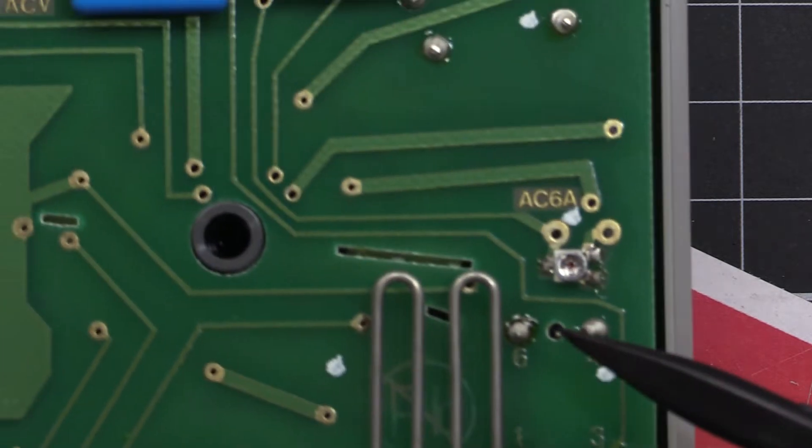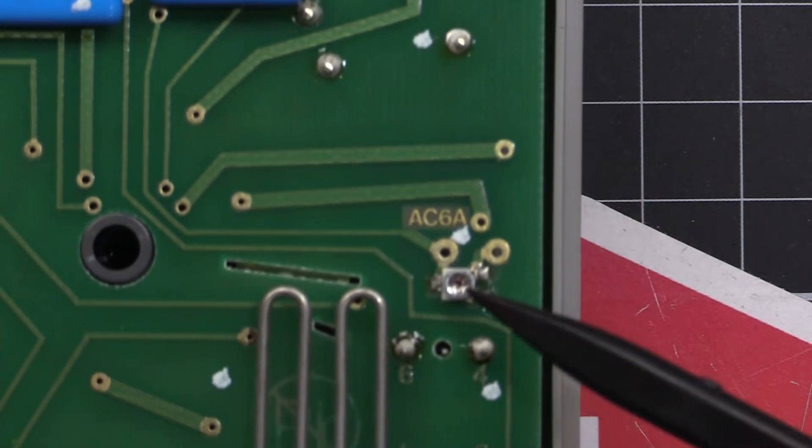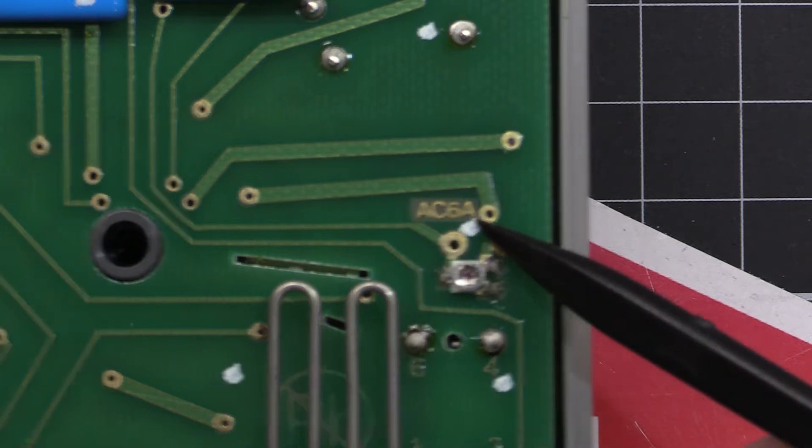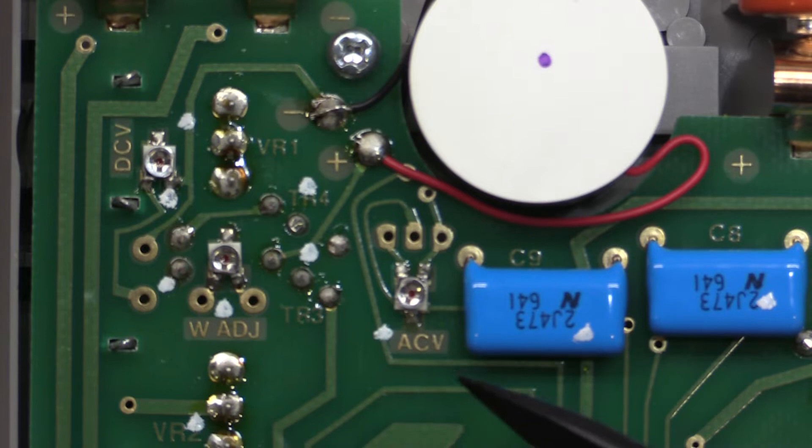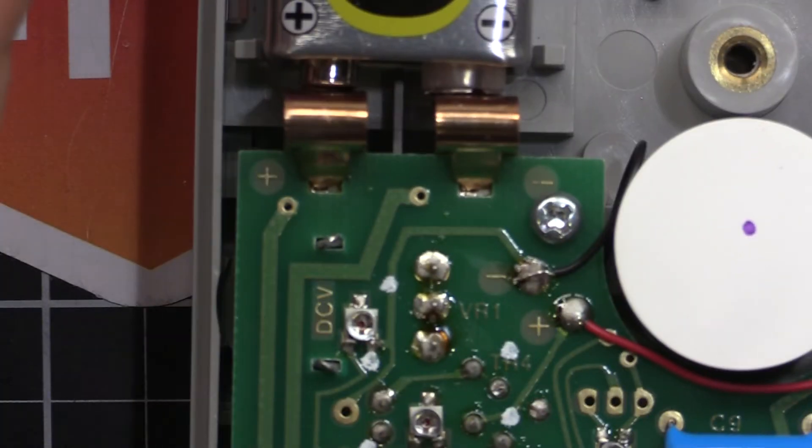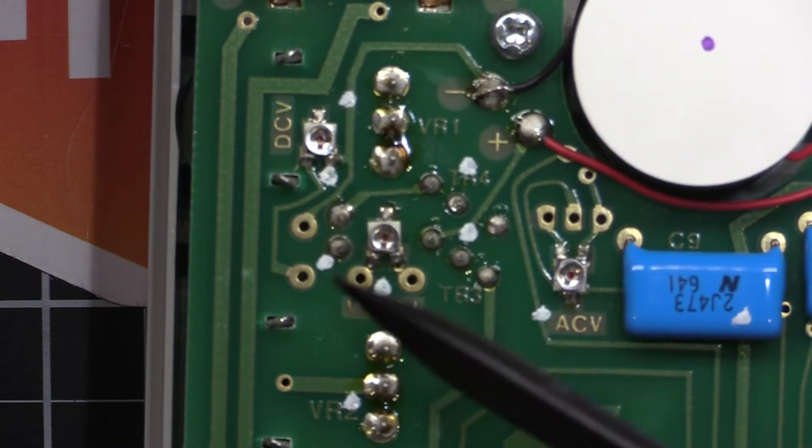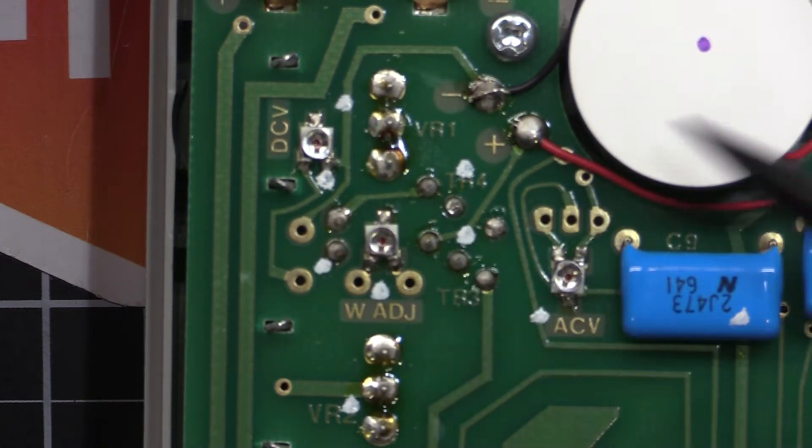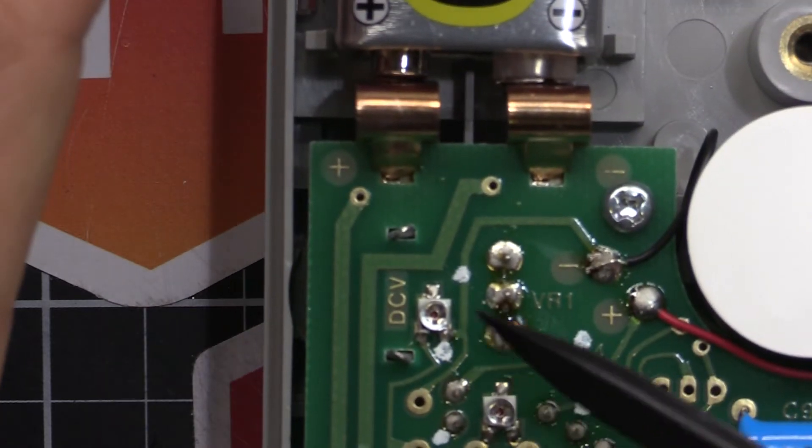So they've also got a little pot there. A trim pot. AC 6A range. Then up here we've got an AC volts calibration pot. W adjust here. I'm not sure what the W stands for. It might be the resistance scale or something. And we've got DC volts here.